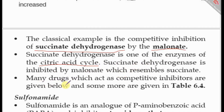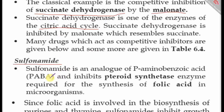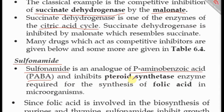Many drugs act as competitive inhibitors. For example, sulfonamides are antimicrobial drugs that are structural analogs of p-aminobenzoic acid, which is a substrate of dihydropteroate synthase. This enzyme is required for the synthesis of folic acid in microorganisms, and folic acid is essential in the biosynthesis of nucleotides.